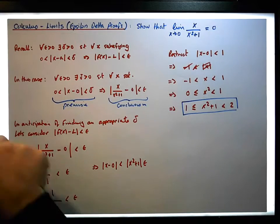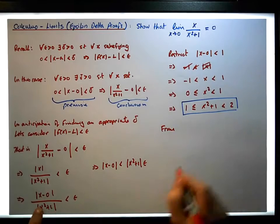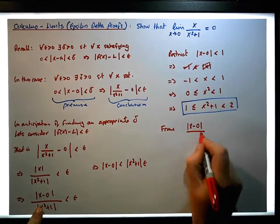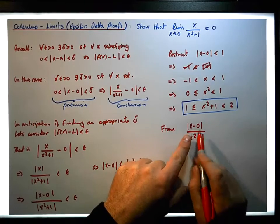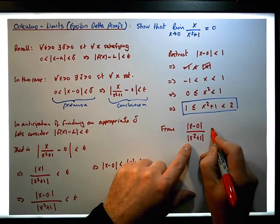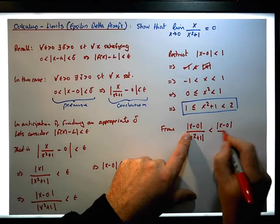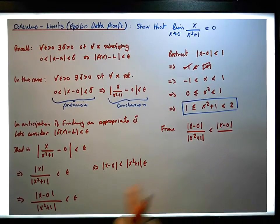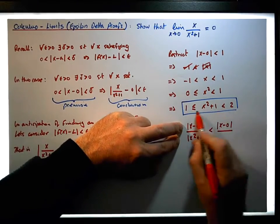So what we now know is that, from this particular fact here, the expression x minus zero all over the absolute value of x squared plus one — we want to find this in terms of x squared plus one and see if substituting a number makes it less than a specific value, ultimately less than epsilon.